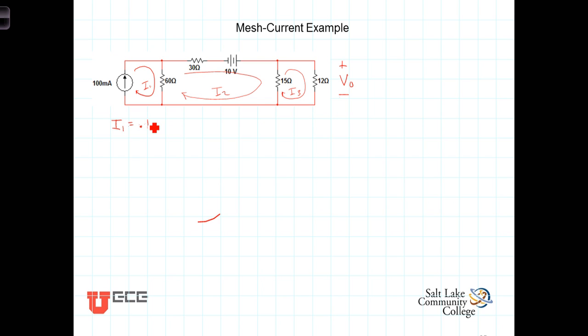All right, let's look at the center mesh here. Starting at that point, we've got 60 ohms times i2 minus i1. Now we could certainly say minus 0.1 because we know what i1 is, but let's just go ahead and write two additional equations in terms of i1, i2, and i3, so we'll have a system of three equations in three unknowns and we can solve it that way. So we'll have 60 times (i2 minus i1) plus, coming across here, 30 times i2.